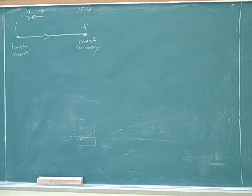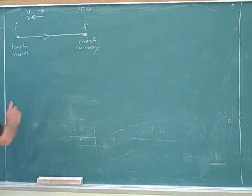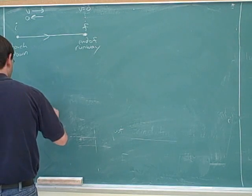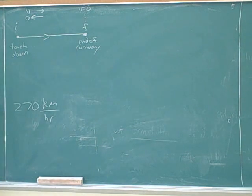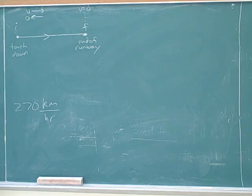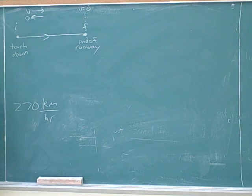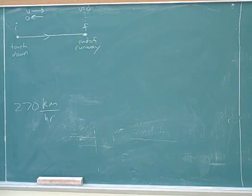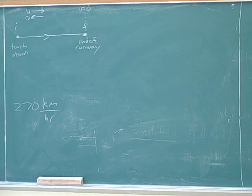We have to use consistent units. The inconsistency is kilometers per hour versus meters per second squared, so we should convert to meters per second. If you wanted to, you could convert everything into kilometers and hours, but those aren't standard units — so we might as well convert everything into meters and seconds. That gives us a little chance to practice unit conversion.